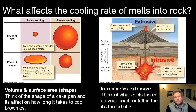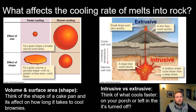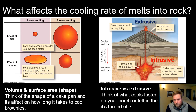When you have an eruption, that lava is flowing out over a volcano but it's relatively thin, so it cools very quickly. Think of what cools faster: if you turn off the oven and leave brownies inside, they cool very slowly because the heat is retained. But if you take them outside in Burlington in the freezing cold, they cool really quickly. So the cooling rate is really important for determining how these melts cool into a rock.